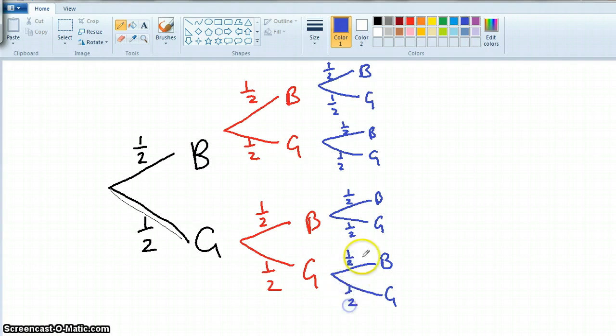So now what happens? We multiply along the branches. Okay, so we go a half times a half times a half. What's that?